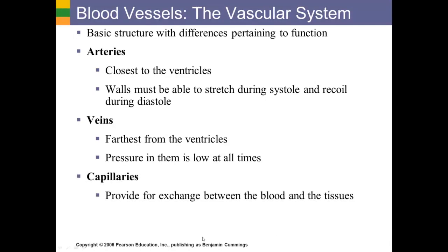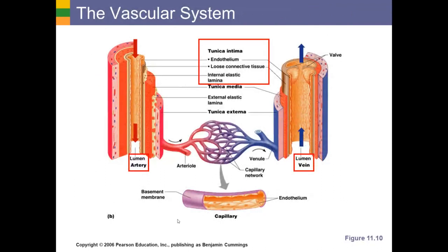Capillaries are the only blood vessels that provide exchange of substances between the blood and the tissue. The arteries simply carry blood to the capillaries; the veins carry blood from the capillaries back to the heart. It's in the capillaries where there's actually exchange of substances between blood and tissue. So we have three different blood vessels with very different functions, and that's going to be evident in their anatomy or structure.